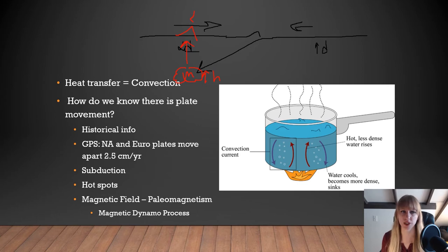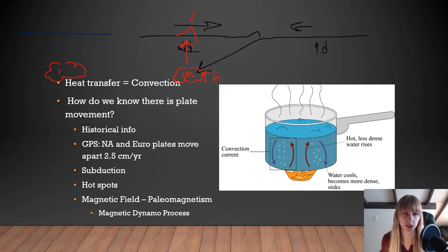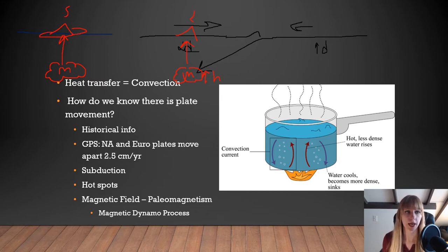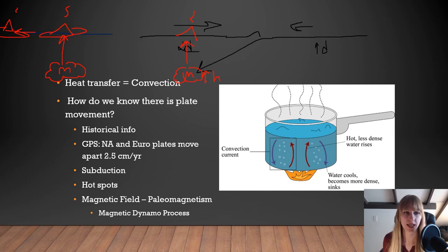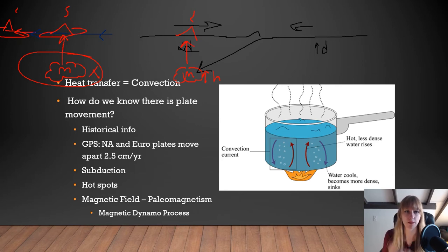Hotspot volcanism is different — for example, Hawaii. Underneath the crust, basaltic magma forms at depth and comes right up forming a volcano. When this occurs in the ocean, it forms volcanic islands. What happens is the crust itself is moving, pushing islands along, while the mantle plume stays fixed — so magma comes up, creates a new volcanic island, the crust moves on, and a new island forms.